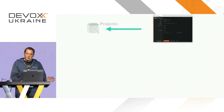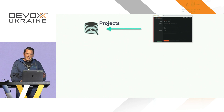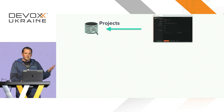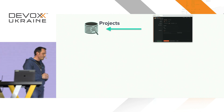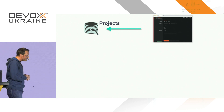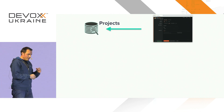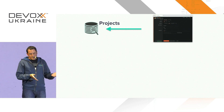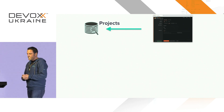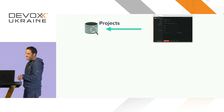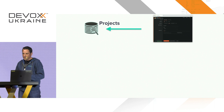Every time you generate a project, we actually collect a snapshot of the request. We basically look at the decisions you've made — the choices you've made, the build system you've chosen, the dependencies you've chosen, etc. It's a way for us to better understand how the community uses Spring.